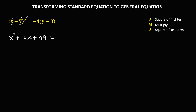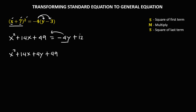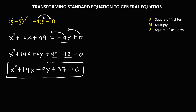On the right side, distribute: negative 4 times Y — that's negative 4Y, and negative 4 times negative 3 — negative times negative — that's positive 12. Equate to 0 by transposing everything to the left side: X squared plus 14X, then negative 4Y becomes positive 4Y, plus 49, and positive 12 becomes negative 12, equals 0. Simplifying: X squared plus 14X plus 4Y, plus 49 minus 12 — that's positive 37, equals 0. This is the general equation.